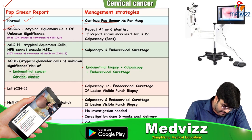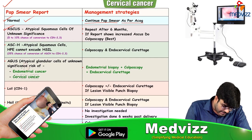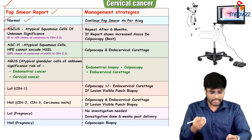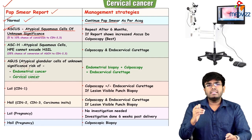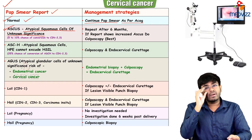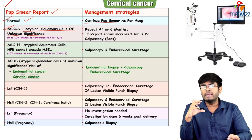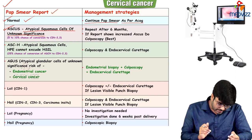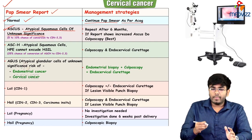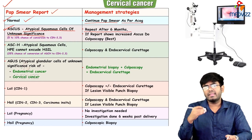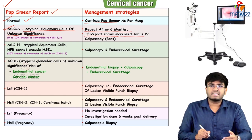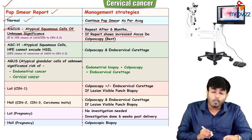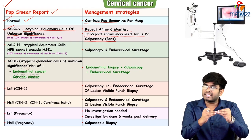For L-SIL or CIN1, do colposcopy — plus or minus endocervical curettage. If the lesion is visible, do a punch biopsy. For H-SIL — which according to Bethesda includes CIN2, CIN3, and carcinoma in situ — do colposcopy along with endocervical curettage. If you can directly see a lesion, do the punch biopsy. Endocervical curettage is done because the endocervix is the most common site for adenocarcinoma to develop.